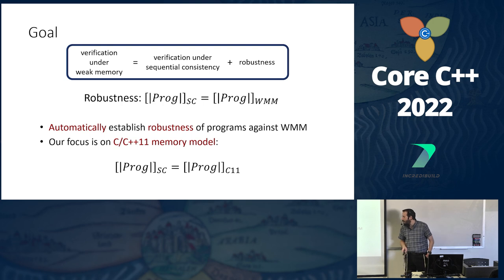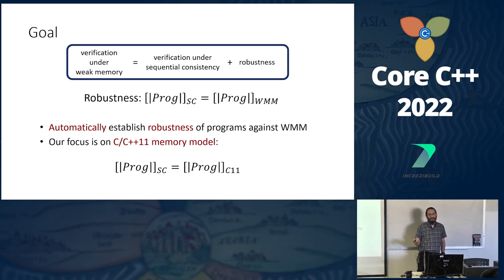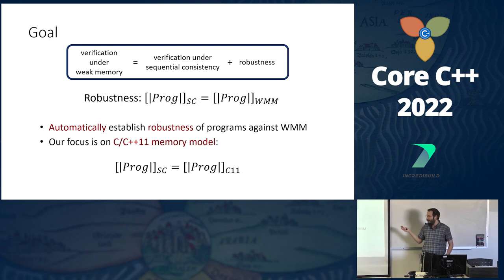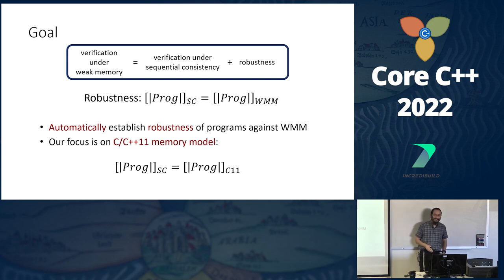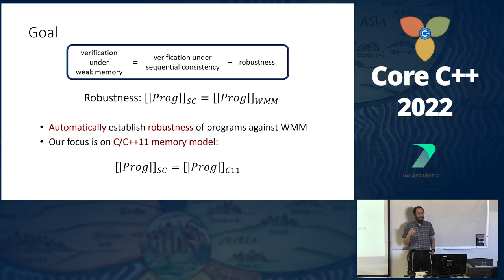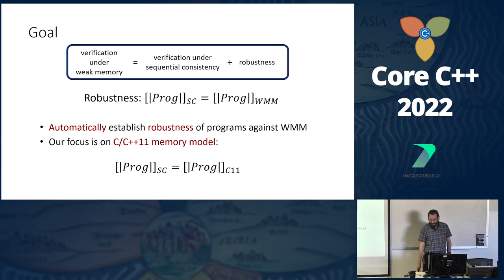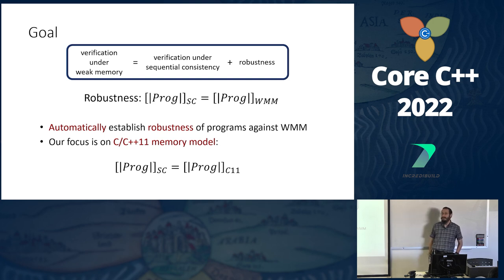Robustness means that all possible behaviors the program could exhibit under the weak memory model are those it could exhibit under sequential consistency. Even though it uses weaker primitives on weaker hardware, we won't see any weak behaviors — only sequential consistency behaviors. This means we can reason about it in terms of SC, and as long as it's correct under SC it's correct under the weak memory model. We focused on the C++20 memory model because the spec has had bug fixes over the years.